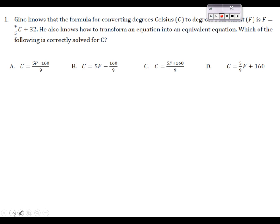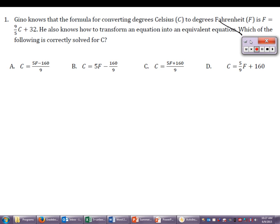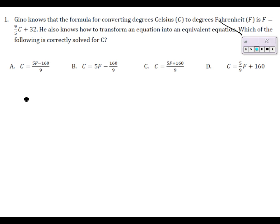Let's take a look at the first problem. We've got Gino, who's very confused about literal equations. Gino wants to solve the equation f equals nine-fifths c plus 32 for c. He wants to transform a formula that takes c values and gives f values into one that takes f values and produces c values. If you know how to solve 68 equals nine-fifths c plus 32, then you know how to do this one too.